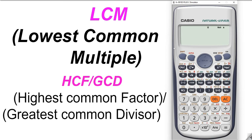Let's find out the SCF as well. For that we have to press alpha and then the GCD button. Let's give the input numbers: 45, and for comma we press shift and then the comma button, and let's give 50. Hit equals, and the number 5 is the greatest common divisor for these two numbers, which is also known as the SCF of these two numbers.